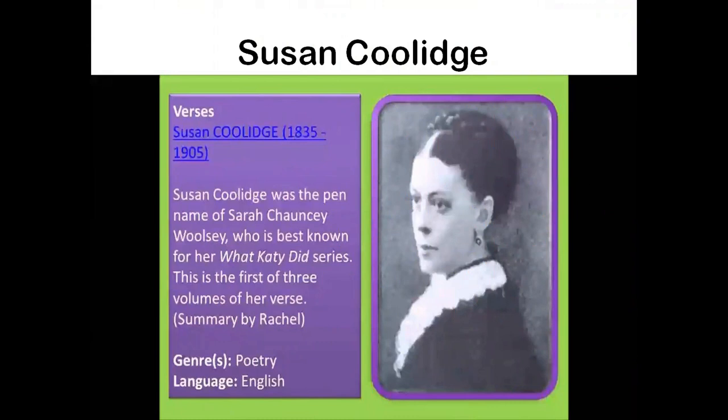Susan Coolidge was the pen name of Sarah Chauncey Woolsey. When I say pen name, it means that she used to write with the name Susan Coolidge and not with her actual name Sarah Chauncey. She is best known for her book 'What Katy Did,' which is a series of three volumes and her best selling book ever.